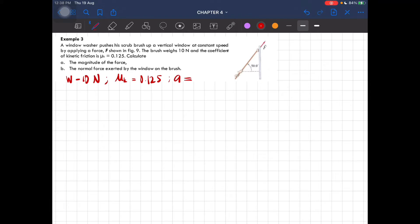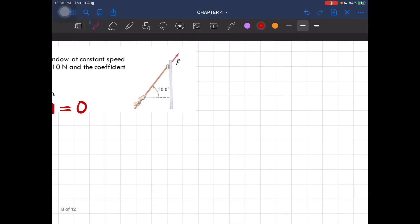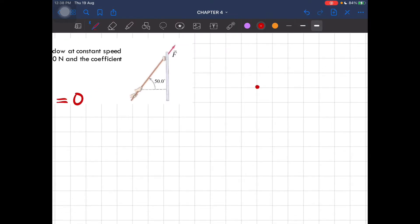So then we can now draw the free body diagram of the brush. So the brush has a weight of 10 newtons, so there's weight here. And then there's a force going at this direction. And then we have the kinetic friction as well, coefficient of kinetic friction. So this is the frictional force. And then we have a normal force by the window to the brush, so N is pointing here.